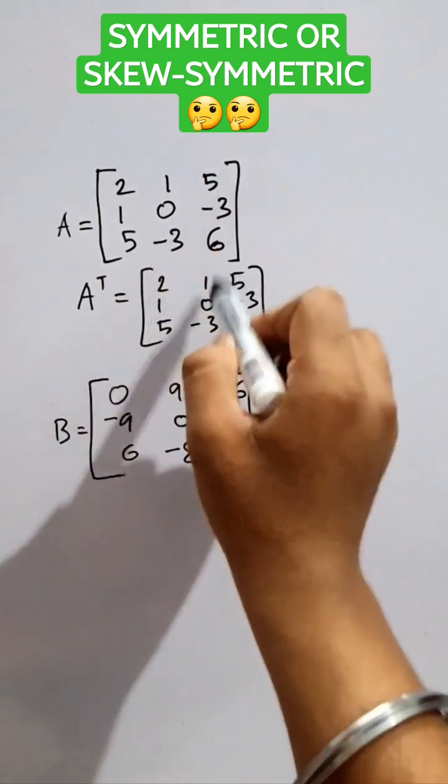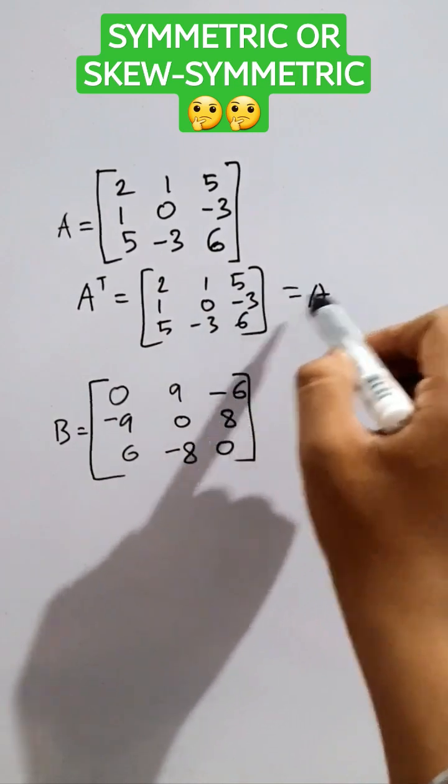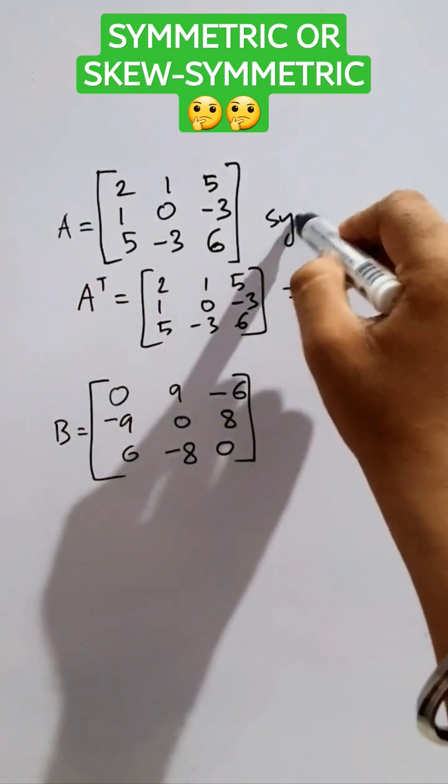Observe carefully, these two matrices are same. A transpose equals A. So this matrix is symmetric matrix.